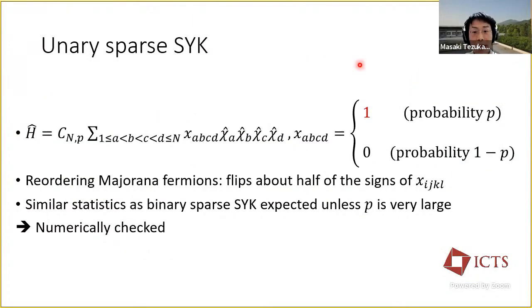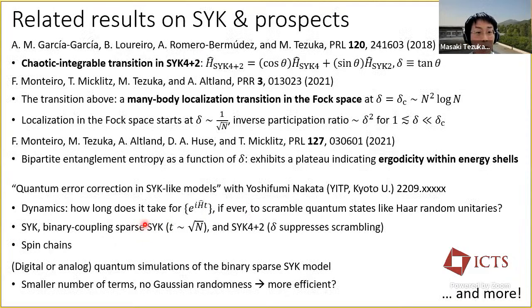Let me comment that we can choose the non-zero couplings just to plus 1 at probability p, and 0 at 1 minus p, and obtain very similar statistics. This is because by reordering Majorana fermions, about half of the signs would be flipped. We have numerically checked this in our paper.